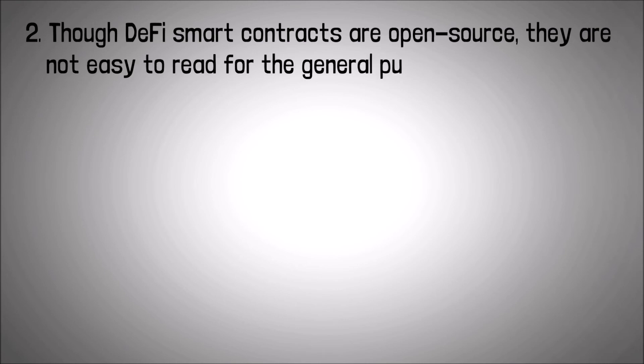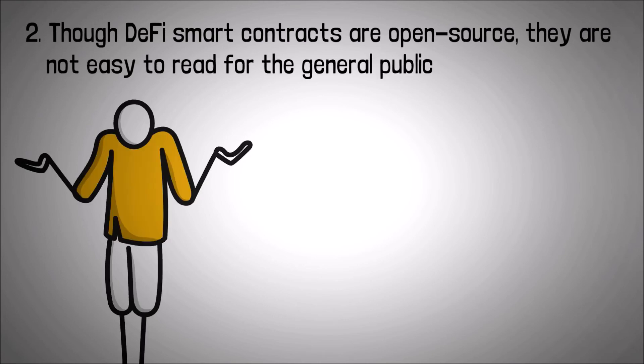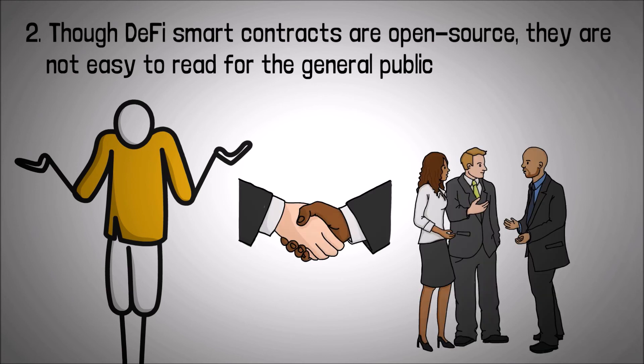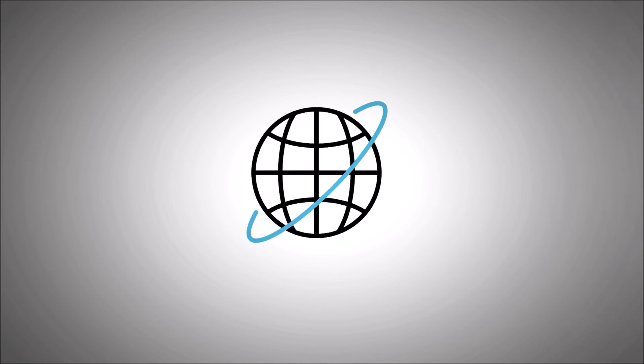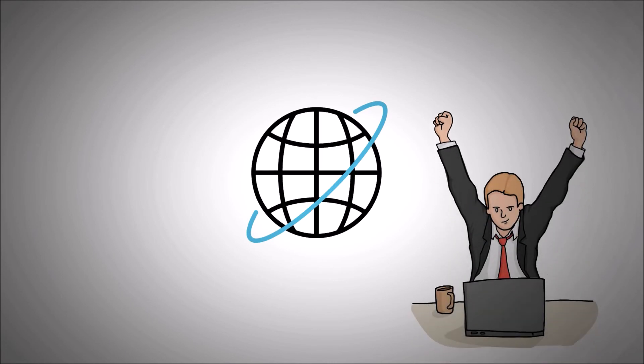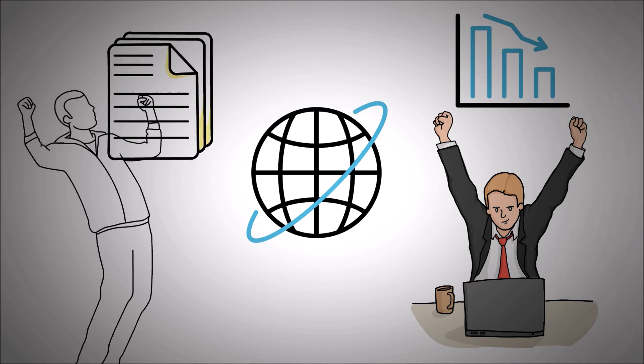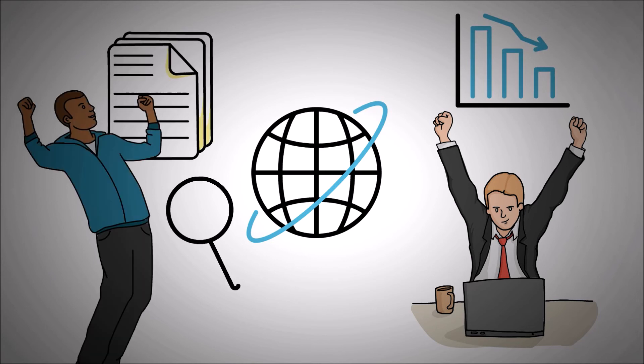Number two, though DeFi smart contracts are open source, they are not easy to read for the general public like you and me. Currently, there's a need to trust the more technical members of the Ethereum community who can read code. The open source-based community helps keep developers in check, but this need will diminish over time as smart contracts become easier to read and other ways to prove the trustworthiness of code are developed.